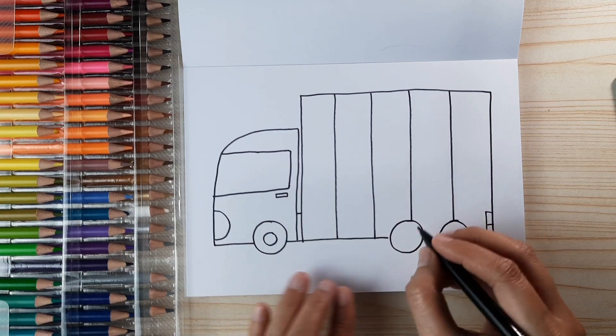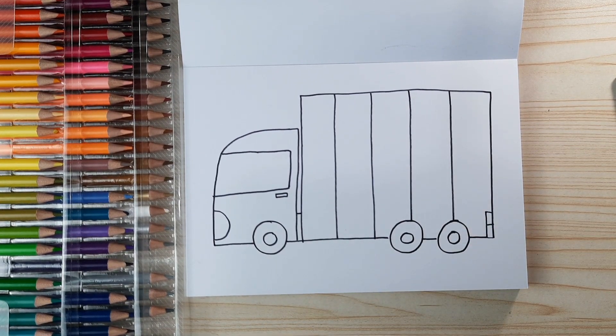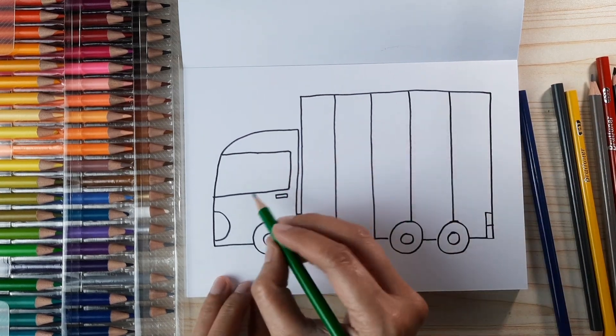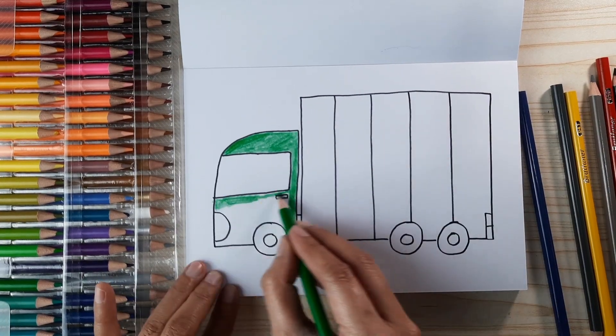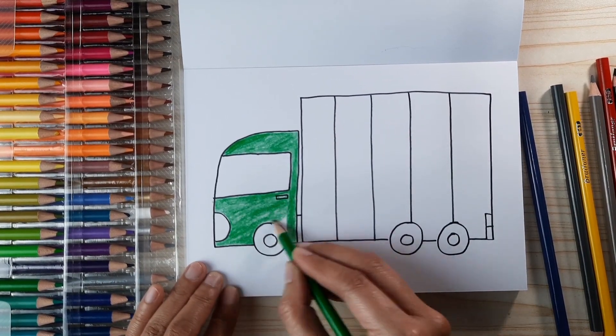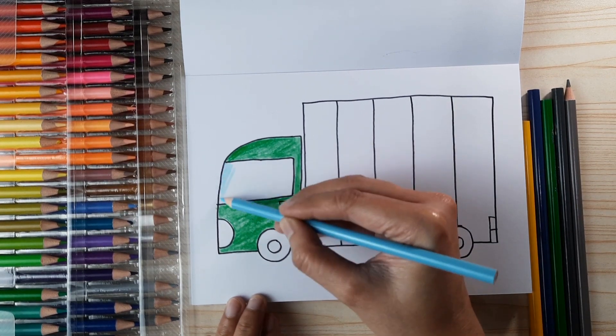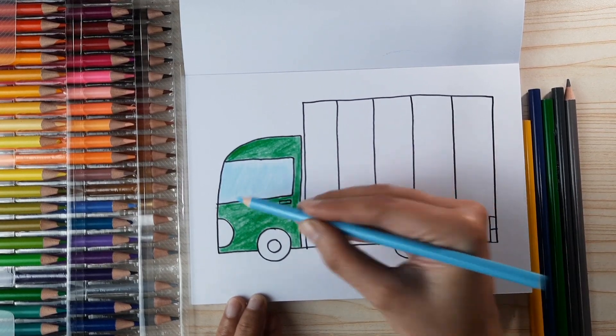Now it's done. Let's start to color. This time I'm gonna color it green for the head, the front of the container truck, and then light blue as the glass.